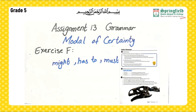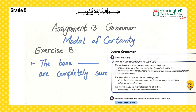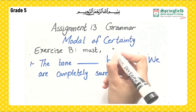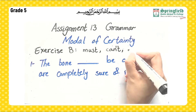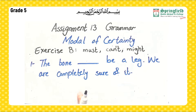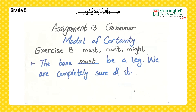We have already covered the modal of certainty, so go back and watch that part to revise. Now Exercise B: read the sentences and complete them with the words in the box — 'must,' 'can't,' and 'might.' For example: 'The bone ___ be a leg' — we are completely sure of it, so the answer is 'must': 'The bone must be a leg.'